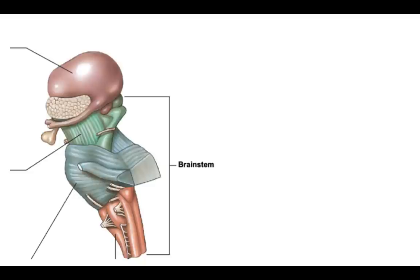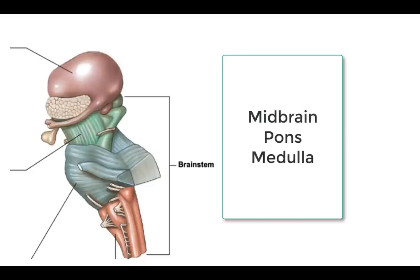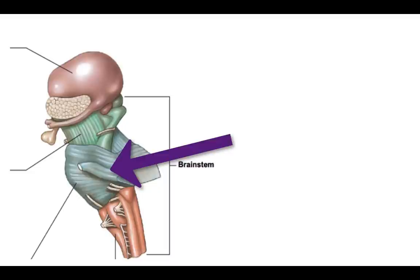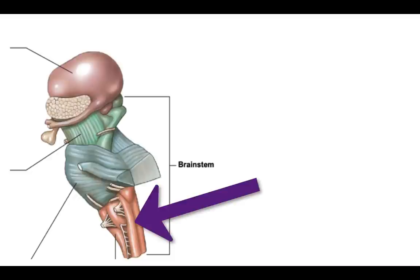The brainstem is made up of three areas: the midbrain, the pons, and the medulla oblongata. The midbrain is the most superior part and contains centers for visual and auditory reflexes and centers for maintaining consciousness. The pons is the middle section and connects the cerebellum to the brainstem. It also has nuclei for somatic and autonomic motor control. The medulla oblongata is the most inferior portion and connects the spinal cord to brain centers that regulate blood pressure, heart rate, and digestion.